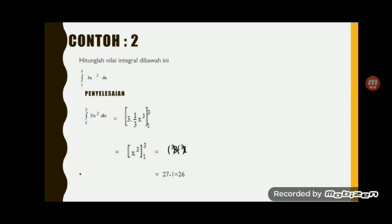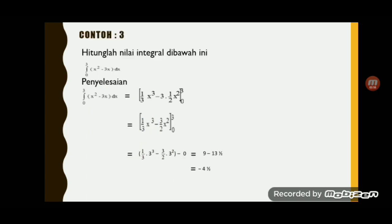Selanjutnya nilai x diganti 3, berarti 3 pangkat 3, dikurangi x diganti 1, berarti 1 pangkat 3. Hasilnya, 3 pangkat 3 adalah 27, dikurangi 1 pangkat 3 adalah 1, sehingga 27 dikurangi 1 sama dengan 26.